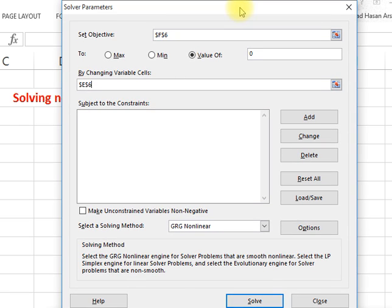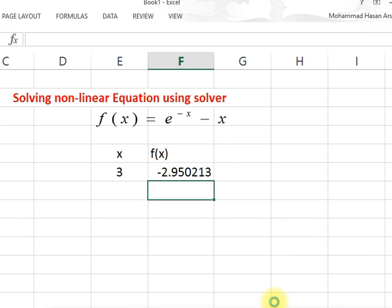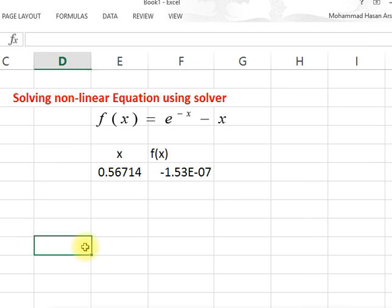If you click solve, it should make the function close to 0 and give you the value of x. That's it.